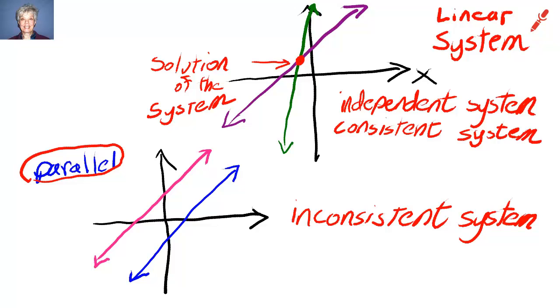Therefore, if two lines do touch, like up here, you have a consistent system. If two lines never touch, you have an inconsistent system. Now, on the other hand, these two lines are definitely separate lines. One has nothing to do with the other. So it's an independent system, just like the other system.